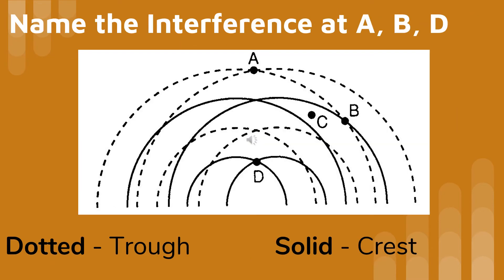Let's name the interference at points A, B, and D. The dotted lines are troughs. At point A, a trough meets a trough, and that's constructive interference. At B, a dotted line meets a solid line — that means a crest meets a trough, and that's destructive interference. At D, a crest meets a crest, so that is constructive interference.